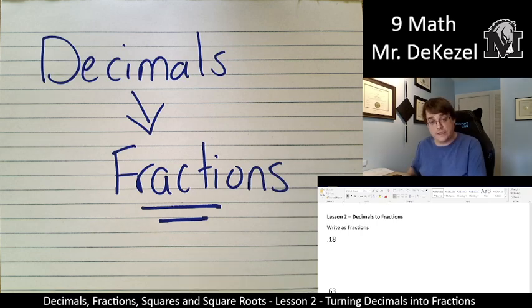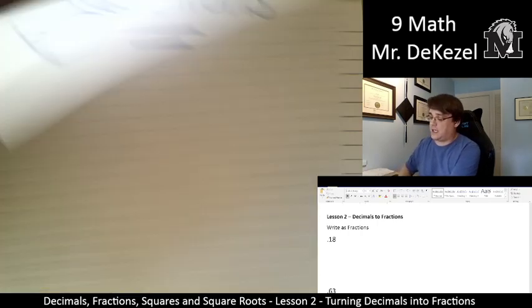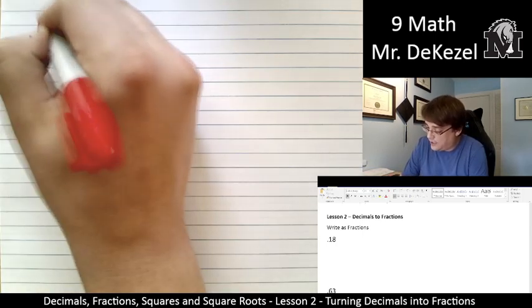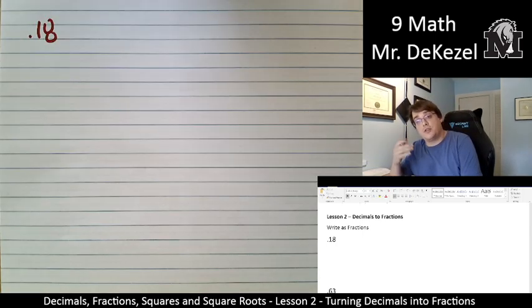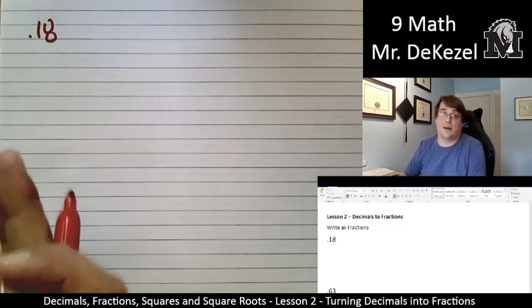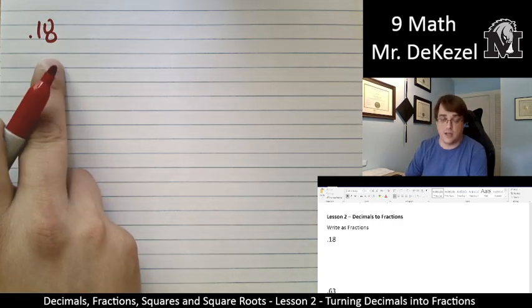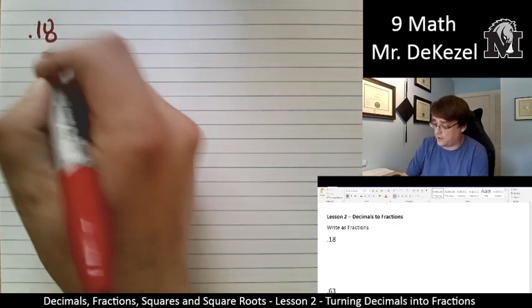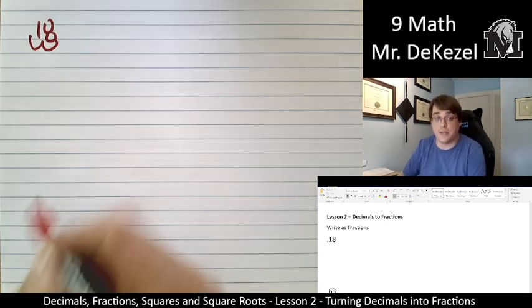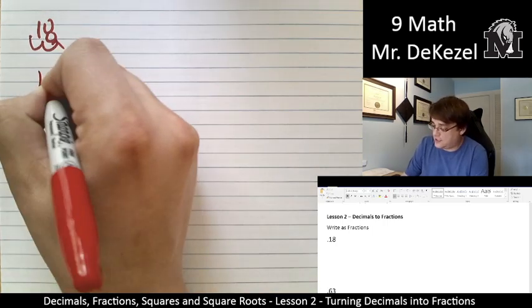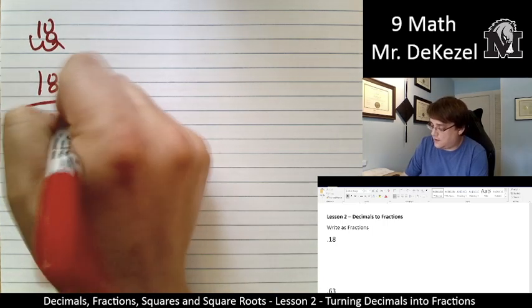The first one you have is 0.18. The key to these questions is going to be to reduce the fractions that we end up with. So if we have 0.18, we are going to do the exact opposite of what we did last time. We are going to get this to be out of 100. Because there's two decimal places here, I'm going to move the decimal two places to right there. And that turns this into the fraction 18 out of 100.